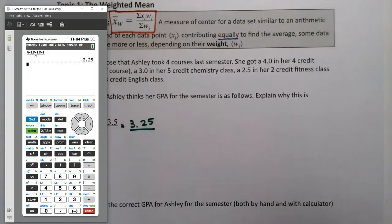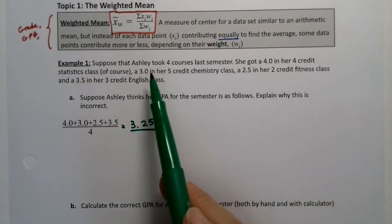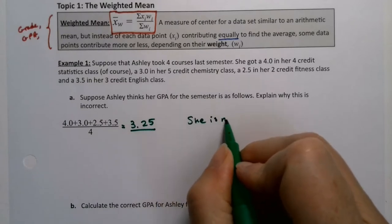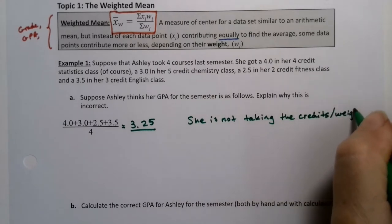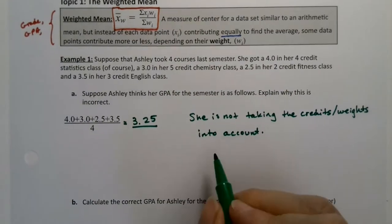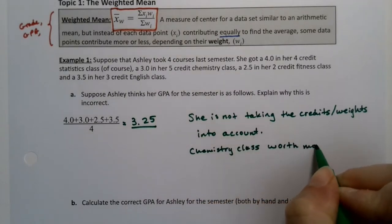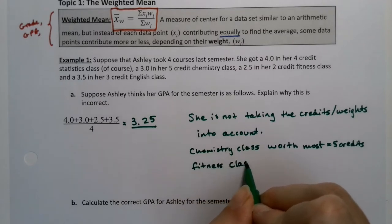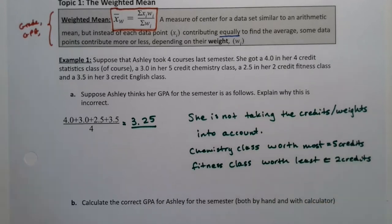She's wrong because she's not taking into account that the chemistry class is worth the most at five credits and the fitness class is worth the least because it's only two credits. She's not taking any of that into account.